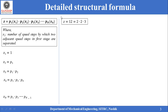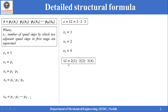For the 12-speed gearbox with structural formula 12 = 2 × 2 × 3, the detailed structural formula is derived as follows: x1 = 1, x2 = p1 = 2, and x3 = p1 × p2 = 2 × 2 = 4. Thus the detailed structural formula becomes 12 = 2(1) × 2(2) × 3(4). By keeping the same values of p1, p2, and p3 and changing the positions of x1, x2, and x3, we can obtain 6 combinations of this structural formula.